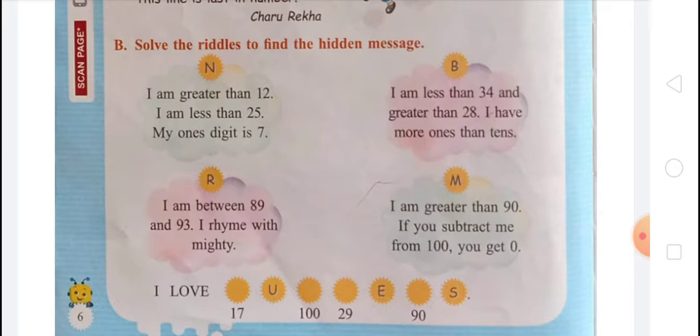Next is riddle R: I am between 89 and 93. The numbers between 89 and 93 are 90, 91, 92, and 93. And I rhyme with mighty — so that is 90, because 'ninety' rhymes with 'mighty'.